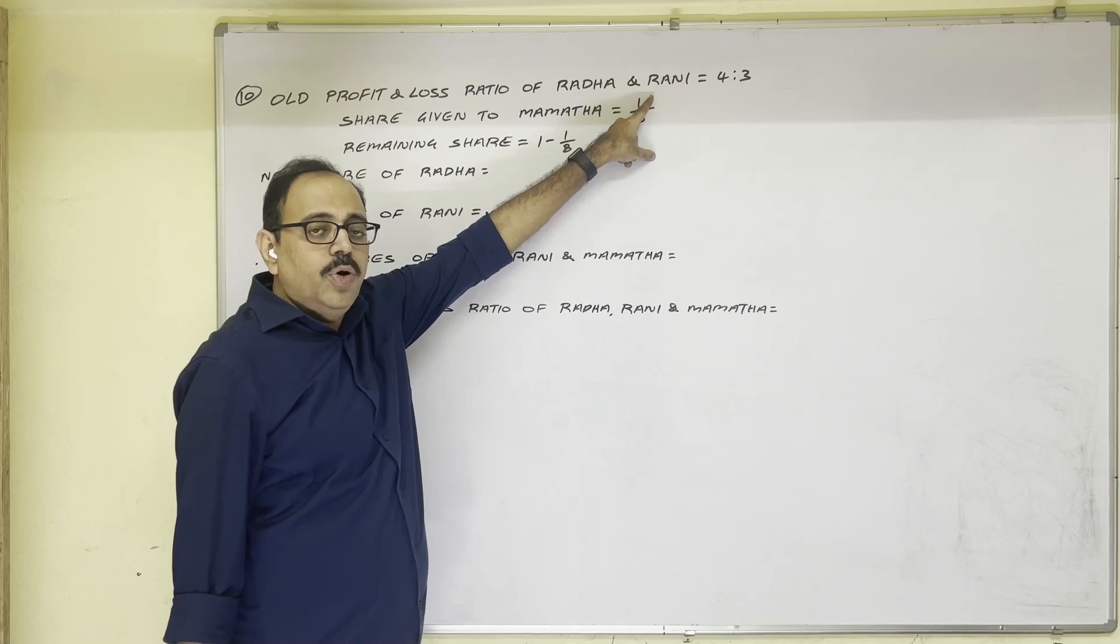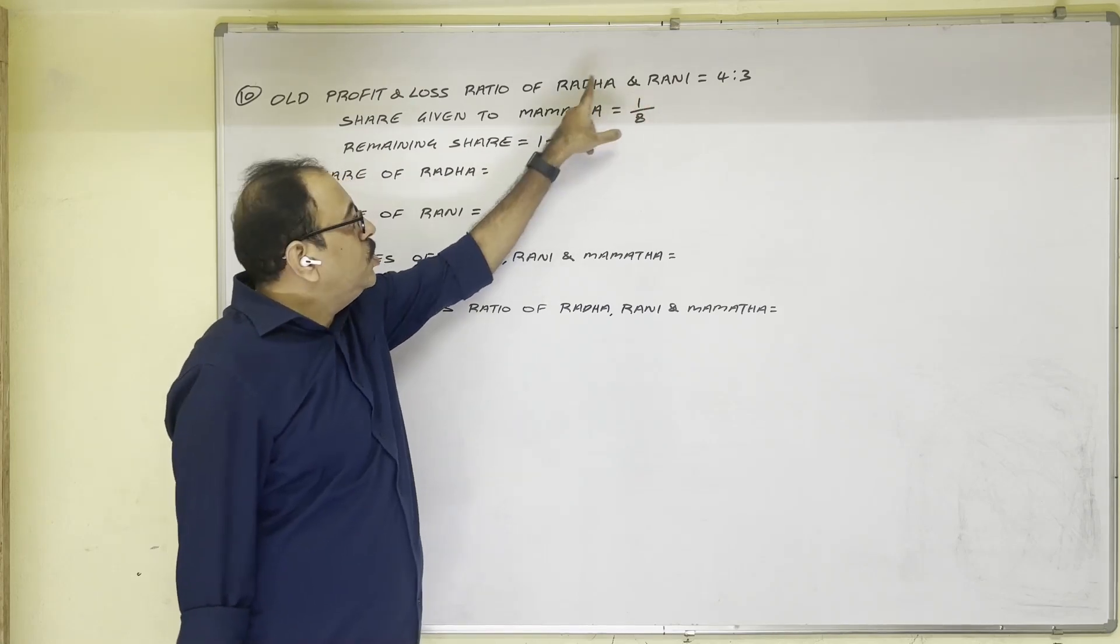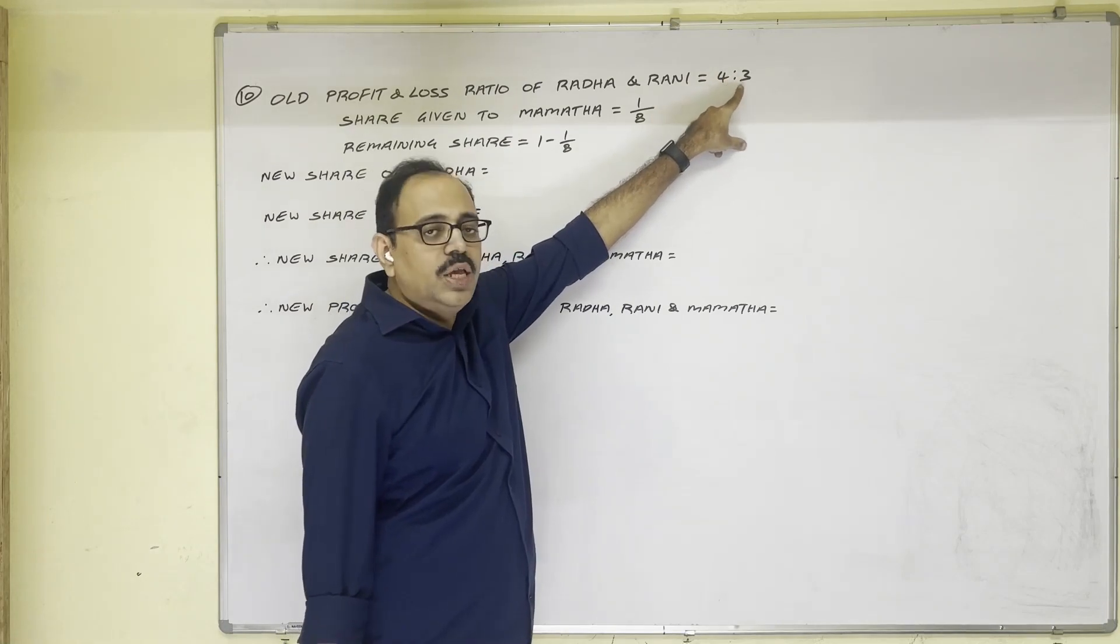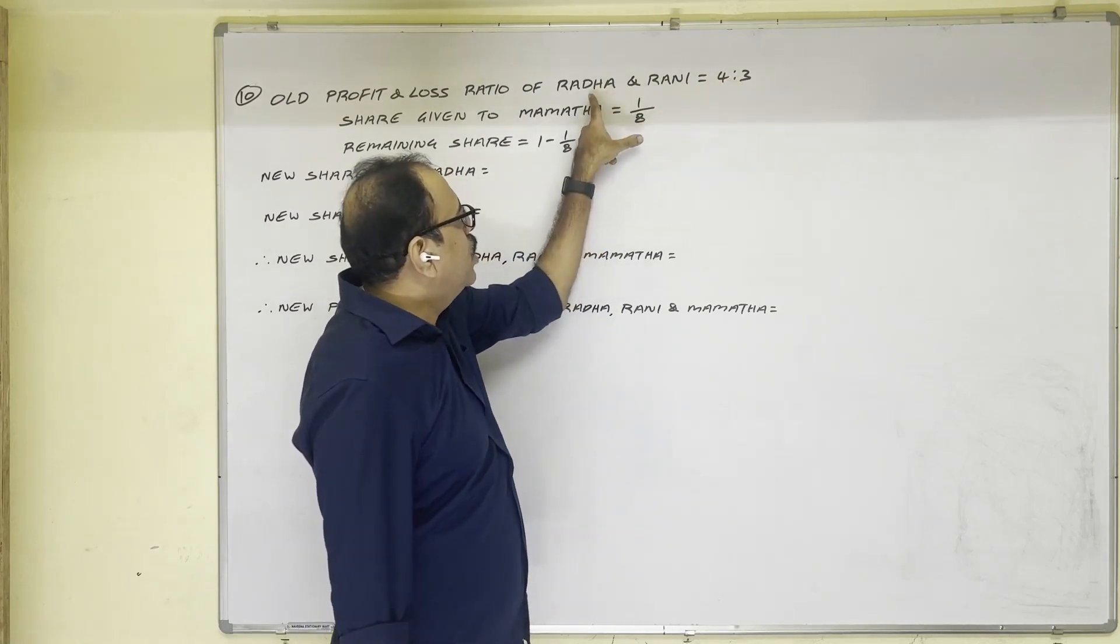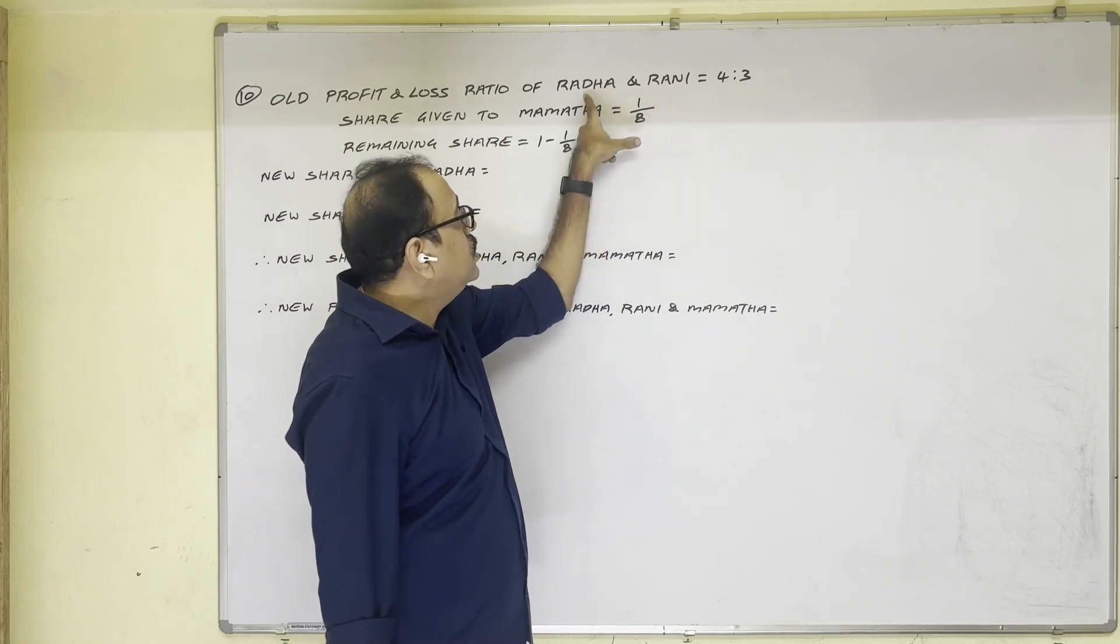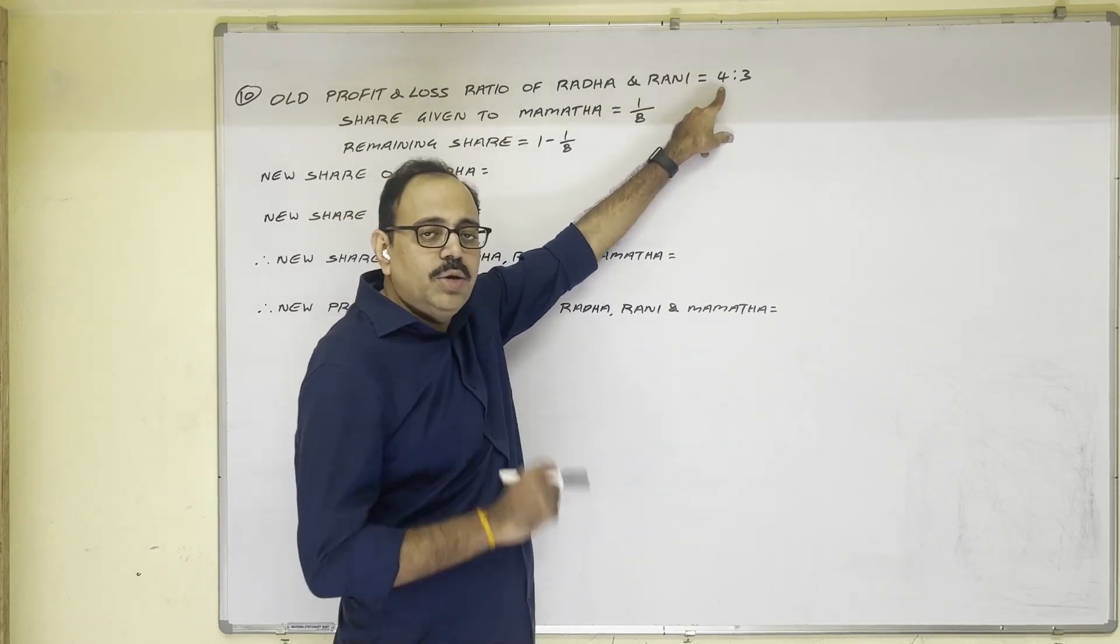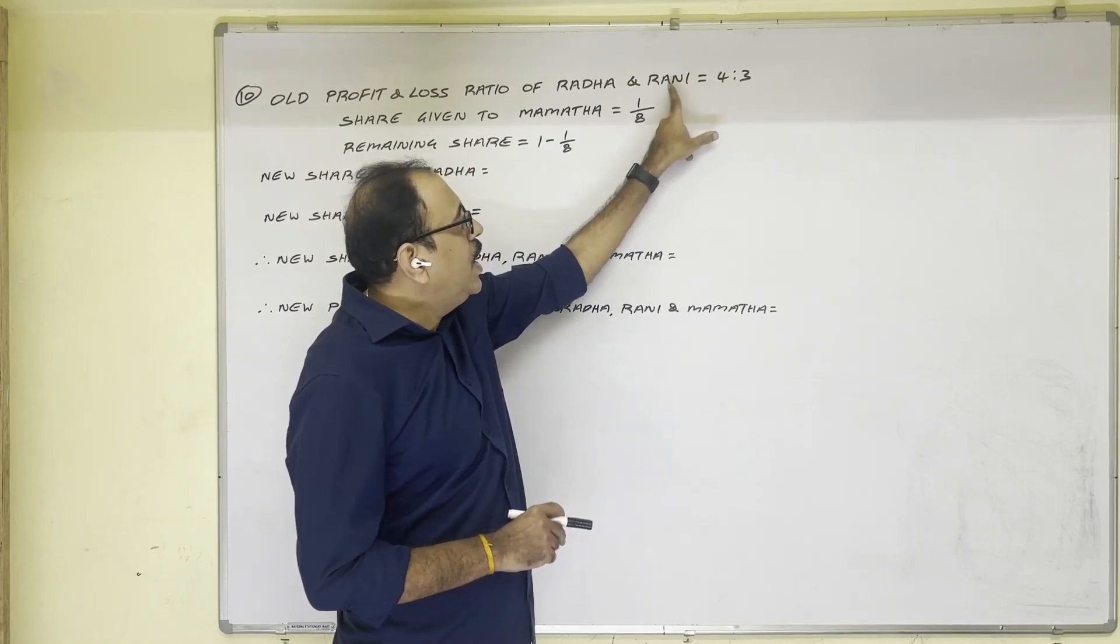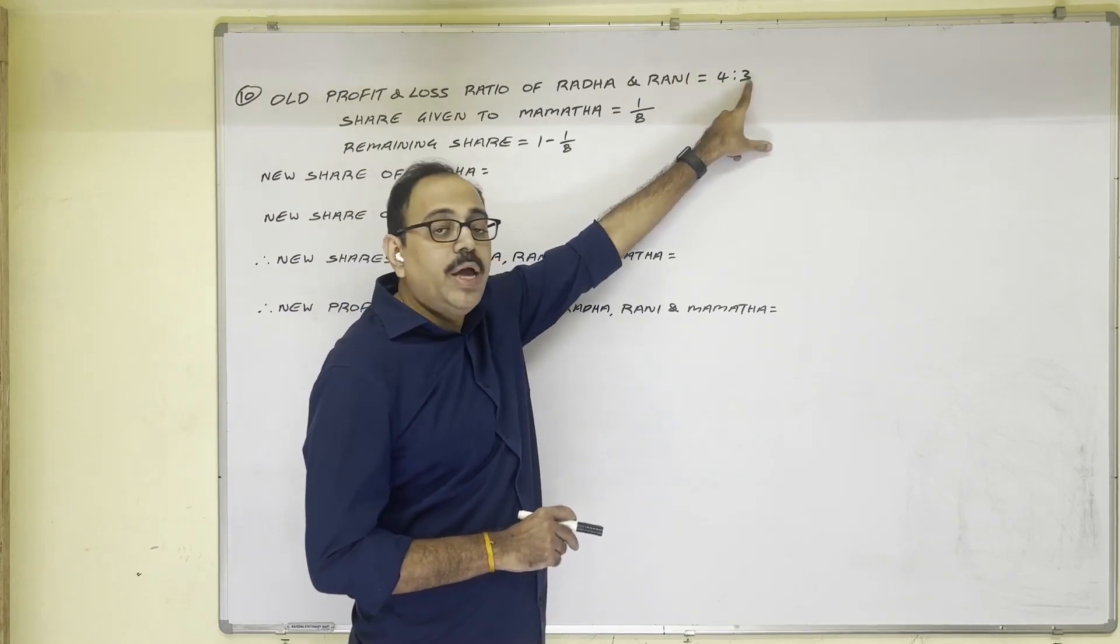Radha and Rani both are partners sharing their profits and losses in the ratio of 4 is to 3. 4 belongs to Radha, 3 belongs to Rani. So Radha's share is 4 by 7 and Rani's share is 3 by 7.